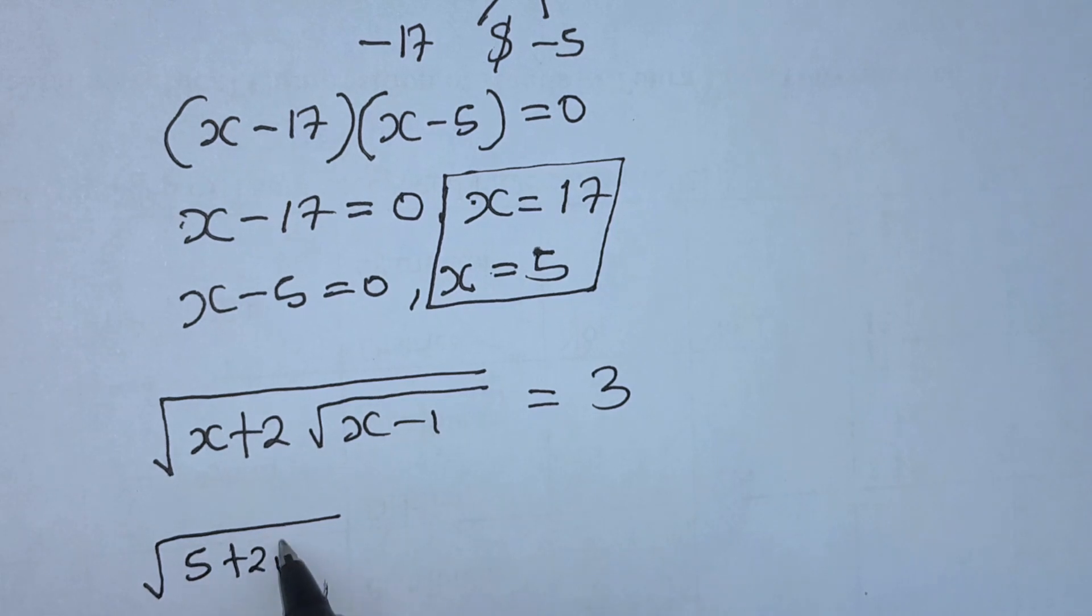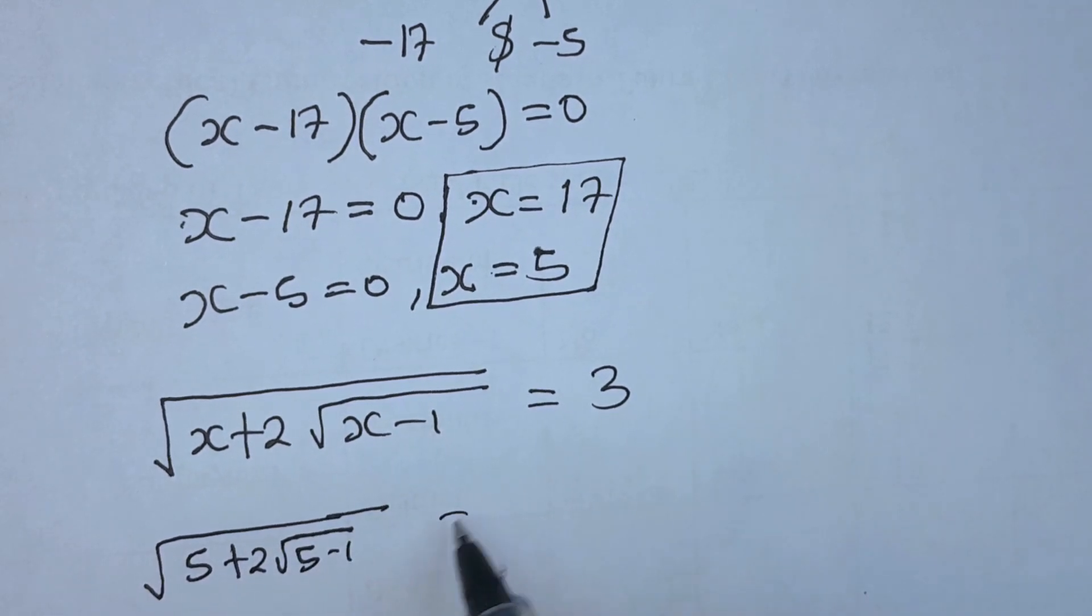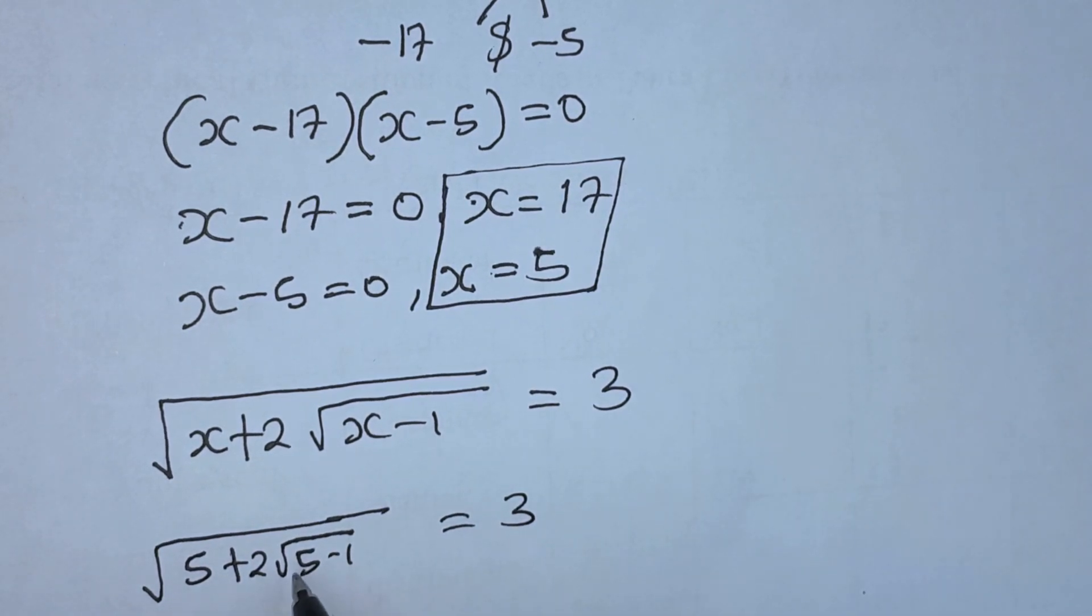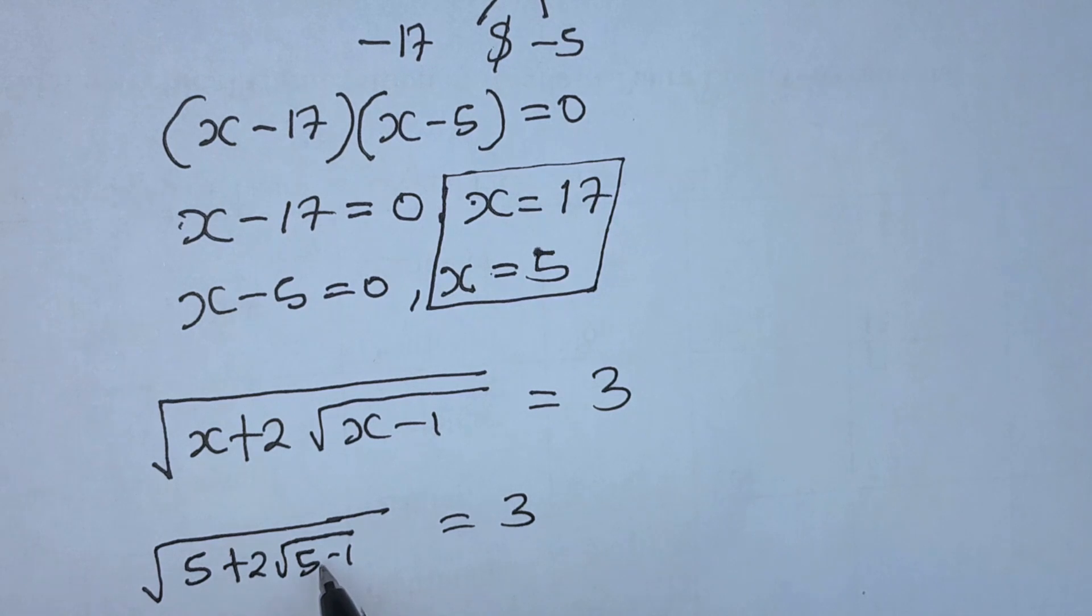Square root of 5 plus 2 times square root of 5 minus 1 equals 3. Let's simplify the inner square root. 5 minus 1 is 4, and square root of 4 is 2, and 2 times 2 is 4.